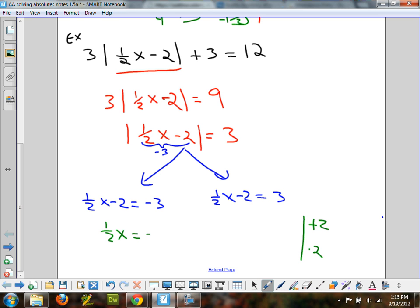So, if I added 2, as we said here, it'd leave negative 1. If I added 2 over on this other problem, it would leave 5. The next step is to multiply by 2, so x is negative 2, or x can be 10, and it should work.